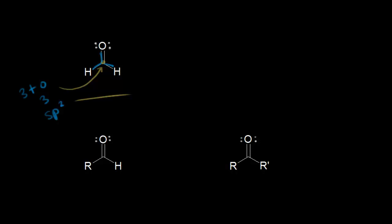Drawing that sp2 hybridized carbon, it has three sp2 hybrid orbitals, and we also know it has an unhybridized p orbital. The hydrogens bonding to the carbonyl carbon each have an electron in an s orbital, which is spherically shaped. The overlap between those s orbitals and the sp2 hybrid orbitals forms sigma bonds.